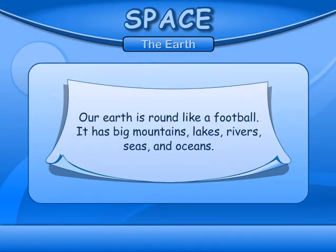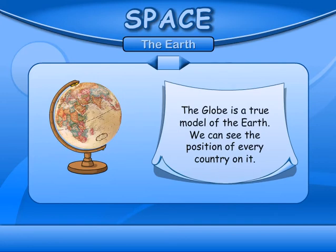The Earth. Our Earth is round like a football. It has big mountains, lakes, rivers, seas and oceans. The globe is a true model of the Earth. We can see the position of every country on it.